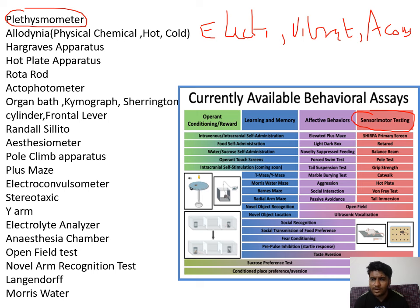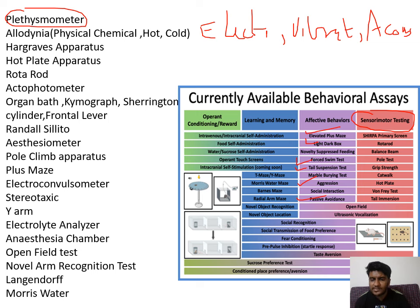For affective behavior related to diseases like Alzheimer's, Parkinson's, depression, anxiety, and epilepsy, tests include the light and dark box test, elevated plus maze, Morris water maze, passive avoidance test, aggression test, tail suspension test (widely used for depression), forced swim test, and open field test. For learning and memory: Barnes maze, T-maze, novel arm recognition, novel object recognition, and Y-maze test.